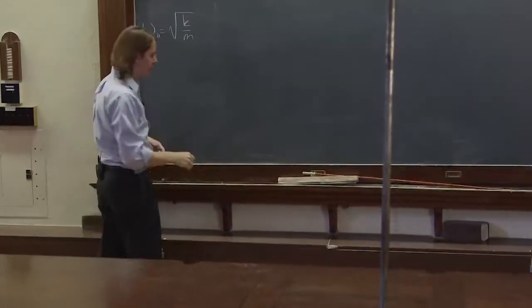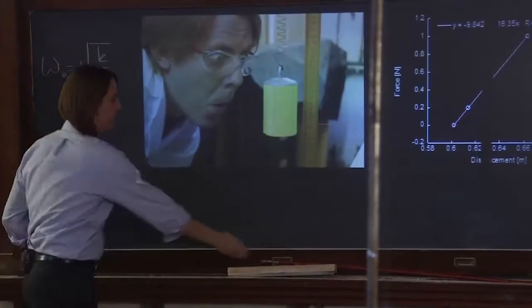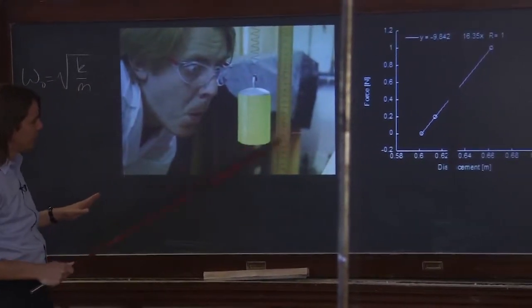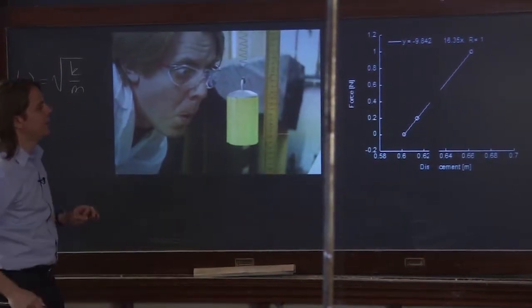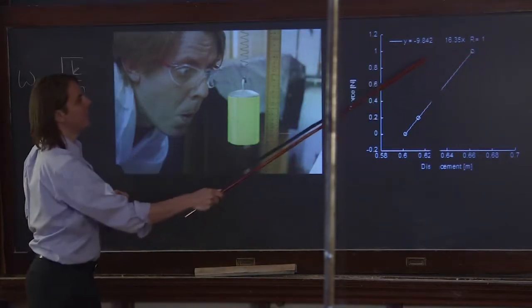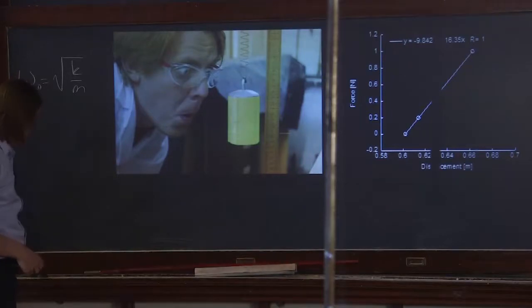So we need those values. For the spring constant, I measured it very carefully one day, hung some weights off the mass, looked at the position of the mass, and plotted the force due to the weights as a function of the displacement, and got a very straight line. Hopefully you can see that. And I got a spring constant of 16.35 newtons per meter.